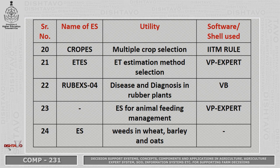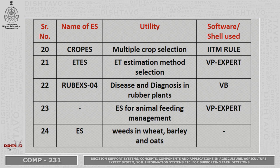ITES is an expert system for evapotranspiration estimation method on the basis of selection, with software VP Expert. Robexess 04 is used for disease diagnosis in rubber plants, with software VB. Another expert system supports animal feeding management with software VP Expert. The last expert system traces the utility of weeds in wheat, barley, oats, and other field crops and can be utilized by the farming community.